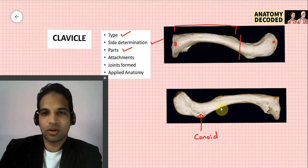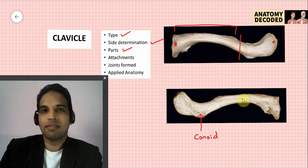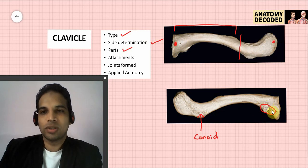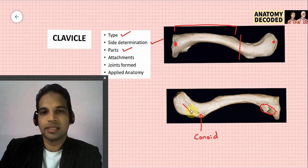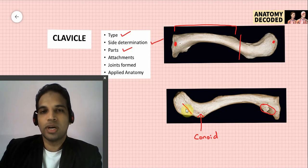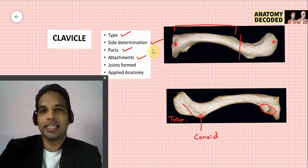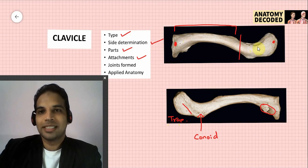Along the inferior surface, there is the conoid tubercle and the subclavian groove. On the medial aspect there is an oval impression for the costoclavicular ligament. On the lateral aspect, the conoid tubercle and trapezoid ridge give attachment to the coracoclavicular ligament — its two parts being the conoid part and the trapezoid part.